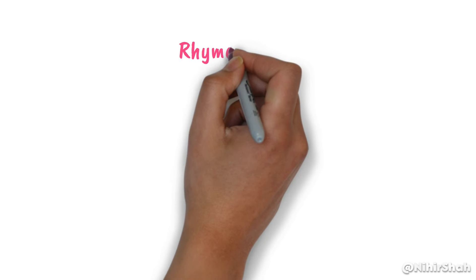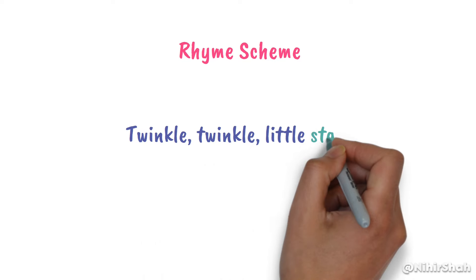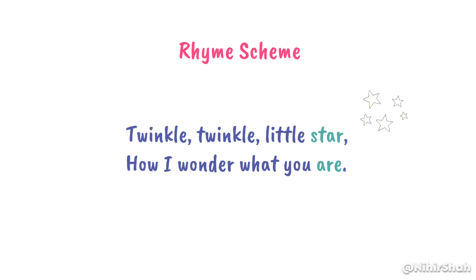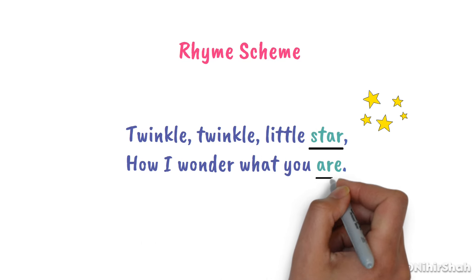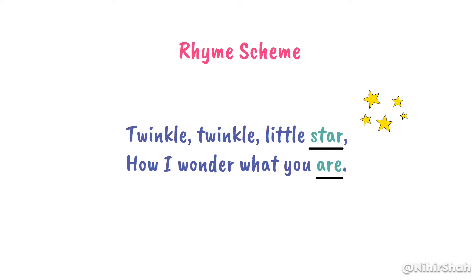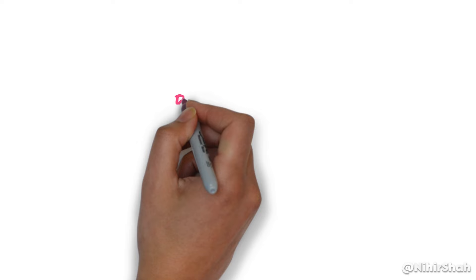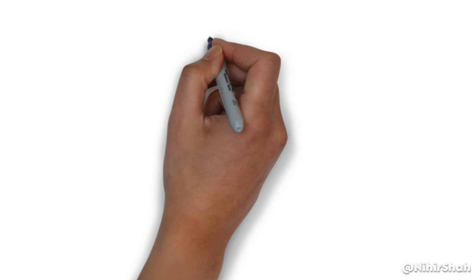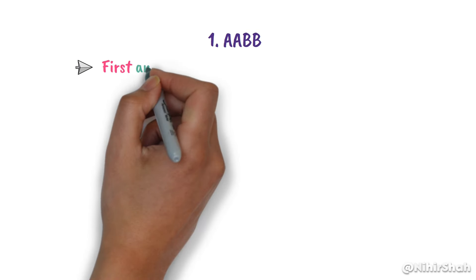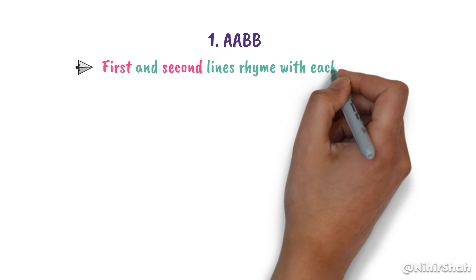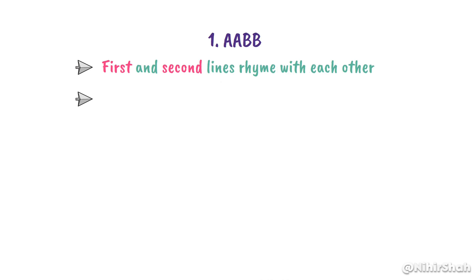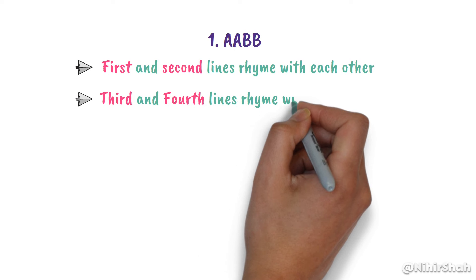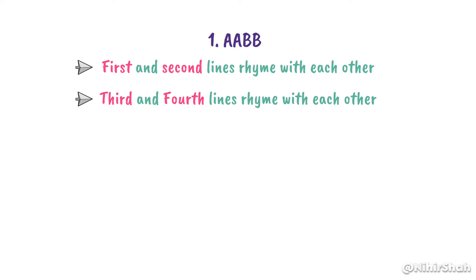Let's understand what is a rhyme scheme. The rhyme scheme of a poem is the pattern of rhymes at the end of each line, often represented by letters. Here are some of the common rhyme schemes. Number 1, A-A-B-B. Here, the 1st and 2nd lines rhyme with each other, and the 3rd and 4th lines rhyme with each other.